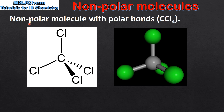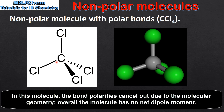Next we look at a non-polar molecule with polar bonds, which is carbon tetrachloride. Carbon tetrachloride is composed of one carbon atom bonded to four chlorine atoms. The carbon to chlorine bond is a polar bond because of the difference in electronegativity between carbon and chlorine.